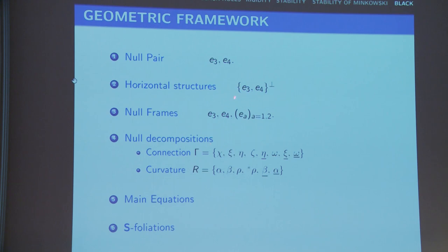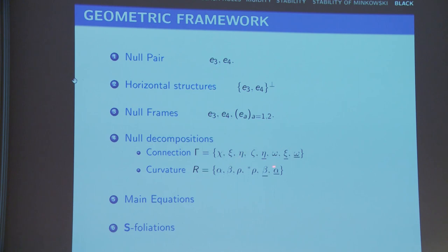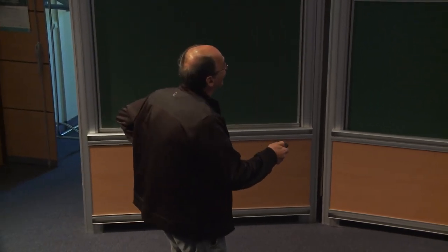Then you look at the horizontal structure induced by this — the space perpendicular to E3, E4. This does not have to be integrable; sometimes it is integrable and that's very useful, but in general it's not, which creates additional mathematical difficulties. You define a null frame to consist of the null pair plus an orthonormal basis of this space. At every point you have two null vectors and the ones orthogonal to them. This space is obviously space-like. When you have the frame, you look at the connection and decompose it into various components relative to the frame. You do the same thing for the curvature, getting alpha, beta, rho, rho-star, beta-bar, alpha-bar.